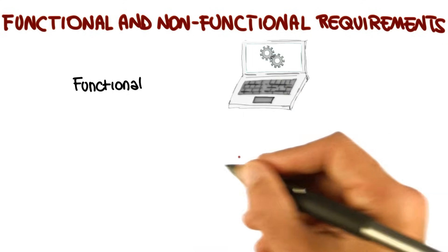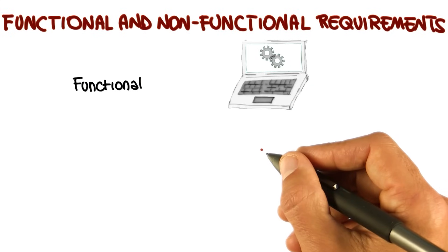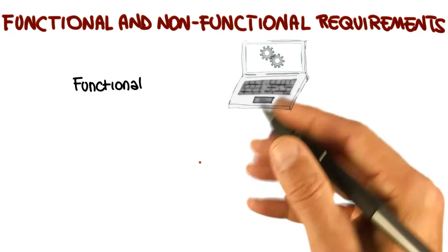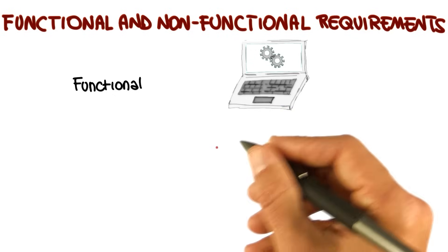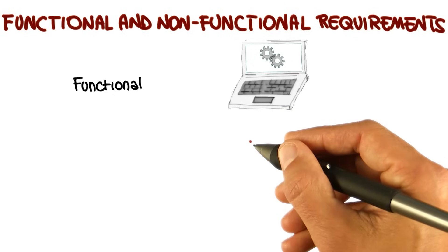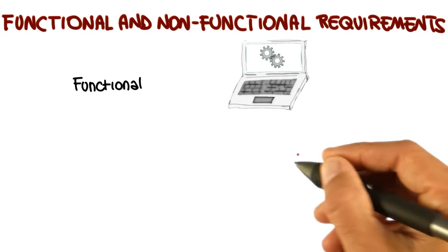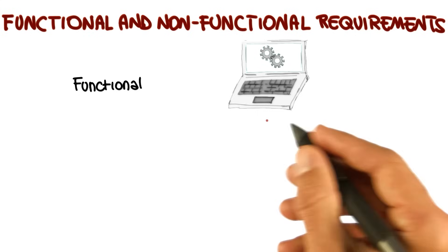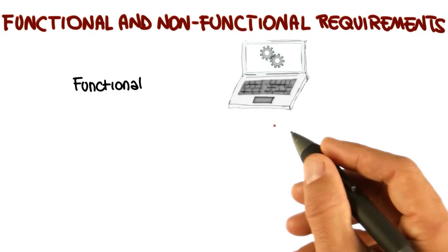For example, the elevator shall take people to the floor they select — that's a functional requirement, it has to do with the functionality of the system. Or for a very simple one, the system has to output the square root of the number passed as an input. These kind of requirements have, in general, well-defined satisfaction criteria.